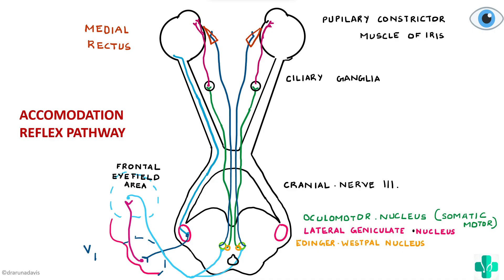This explains all three effects of the near response or accommodation reflex. Because the Edinger-Westphal nucleus is involved, we have constriction of the pupil and increased curvature of the lens. Because the somatic motor nucleus is involved, impulses reach the medial rectus, producing convergence of the eyeball. Importantly, for the accommodation reflex, the pre-tectal nucleus is not involved — this is the major difference between the light reflex and the accommodation reflex.